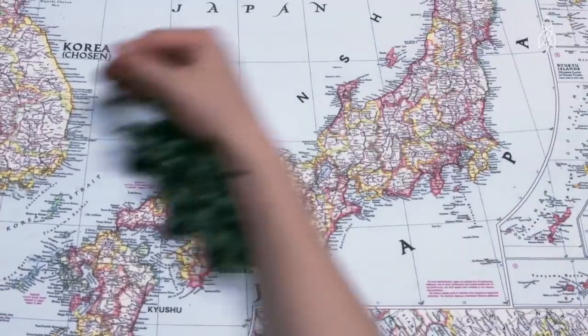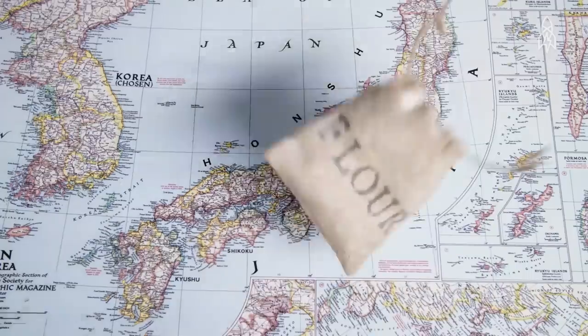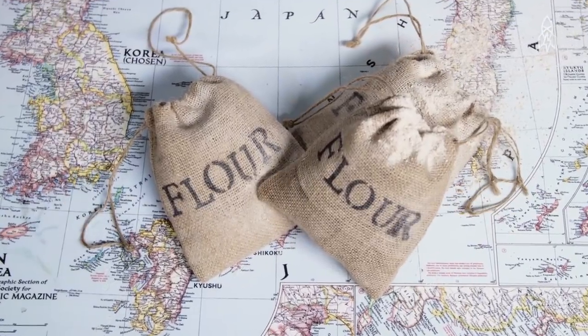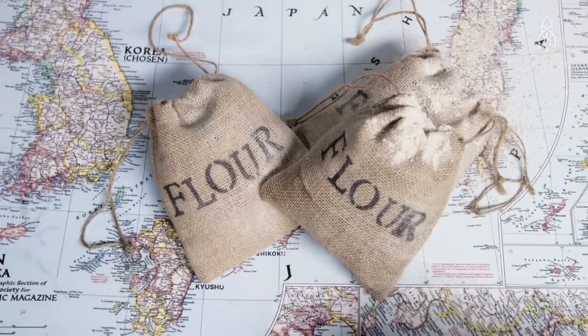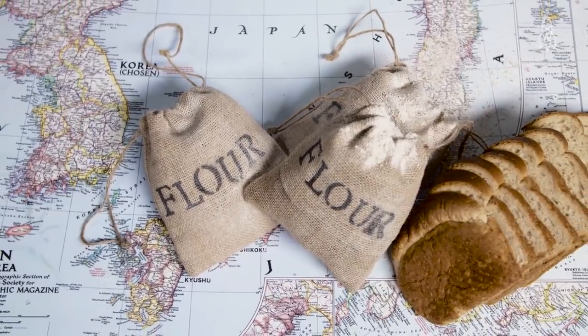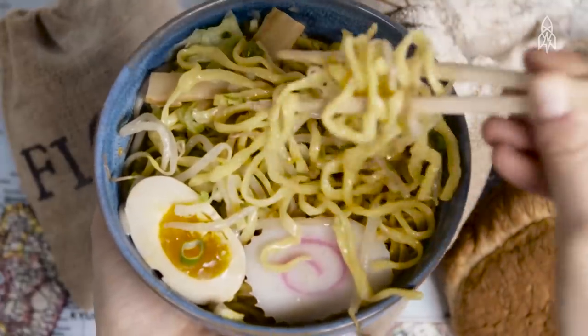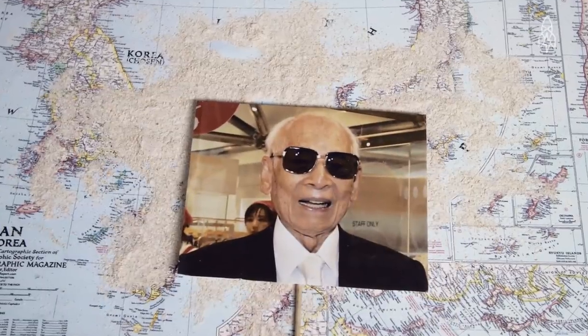After World War II, food shortages plagued Japanese cities, so the U.S. supplied wheat flour and encouraged the Japanese to make bread. One man, named Momofuku Ando, didn't understand why his people would make bread instead of noodles, something that was already part of their culture. Ando decided to take matters into his own hands and create a new ramen made to last.